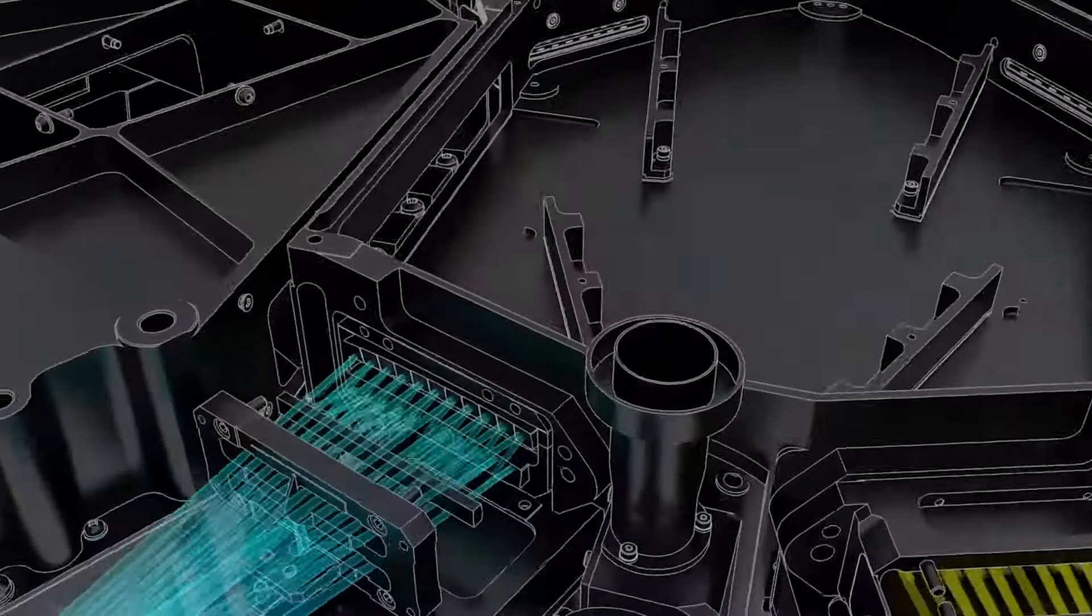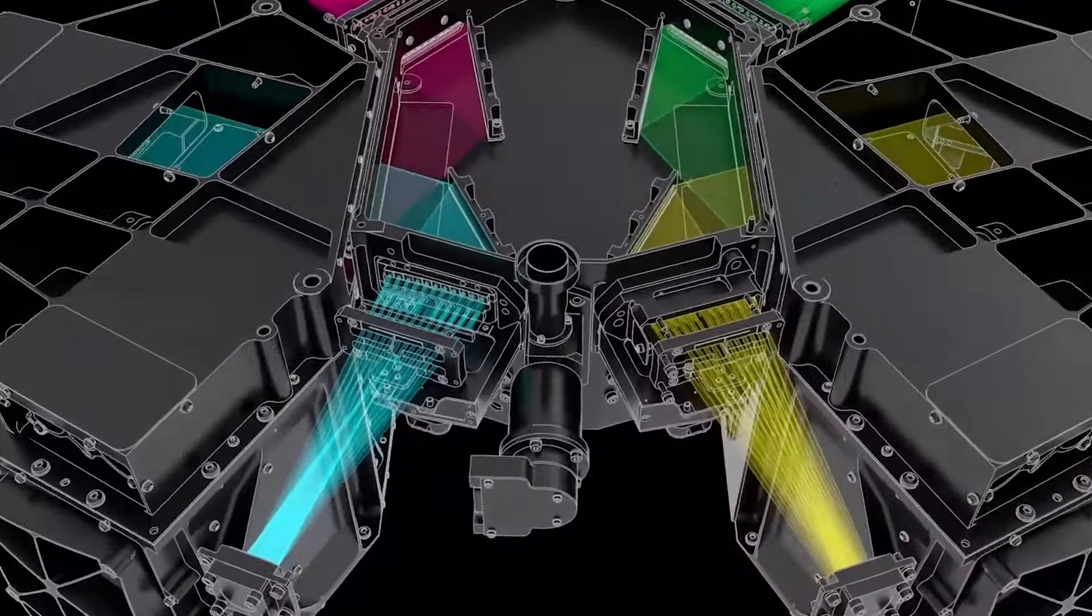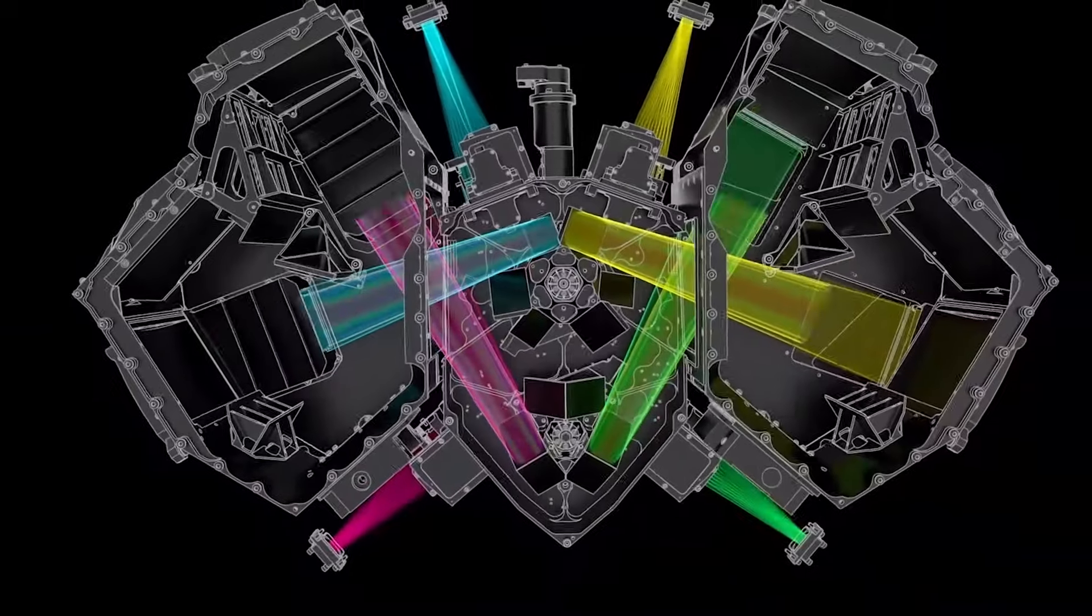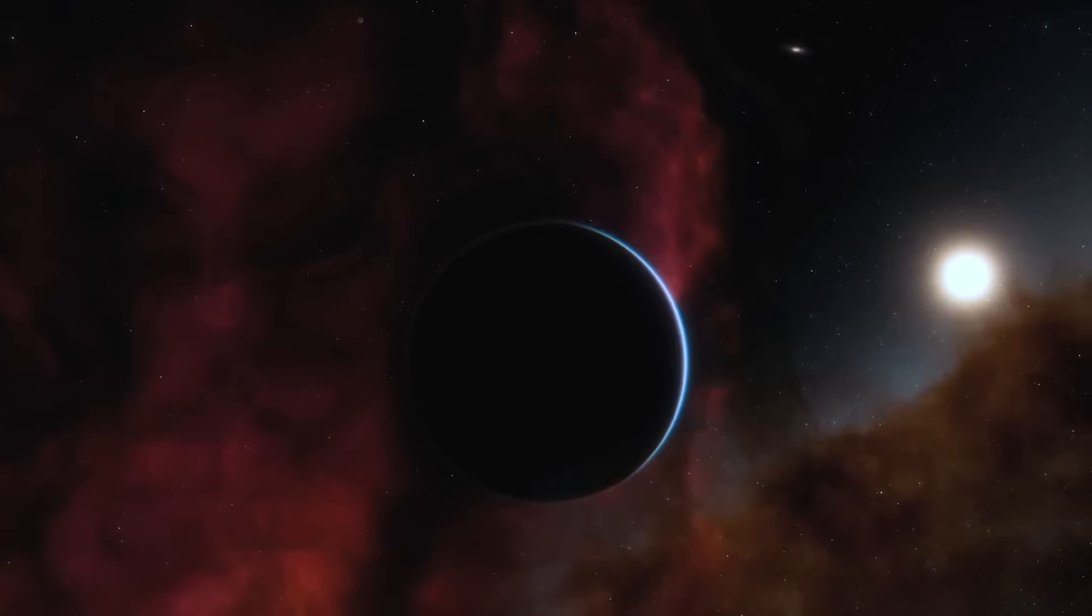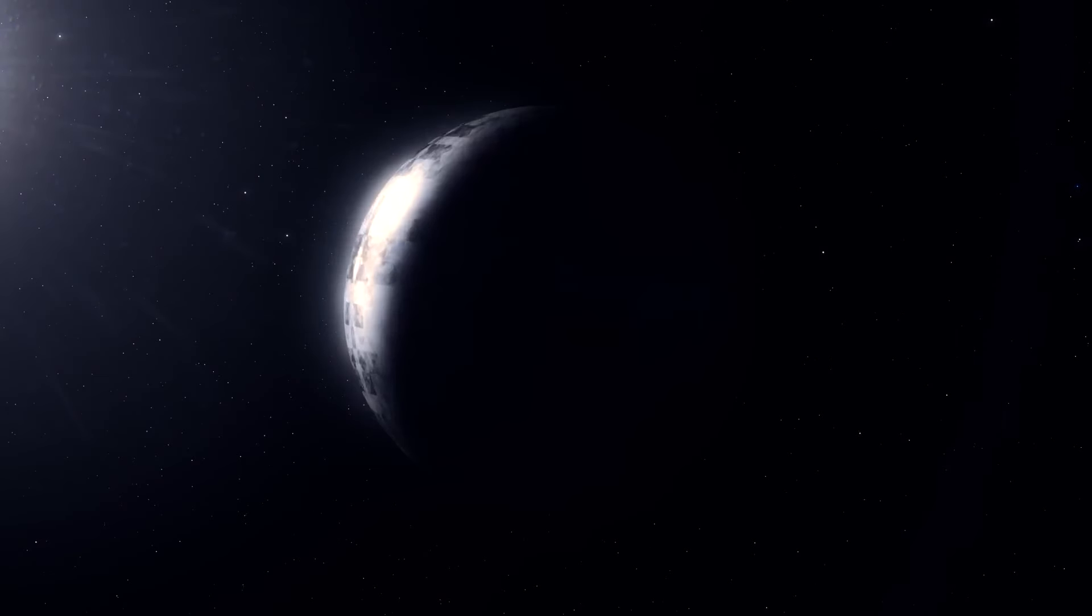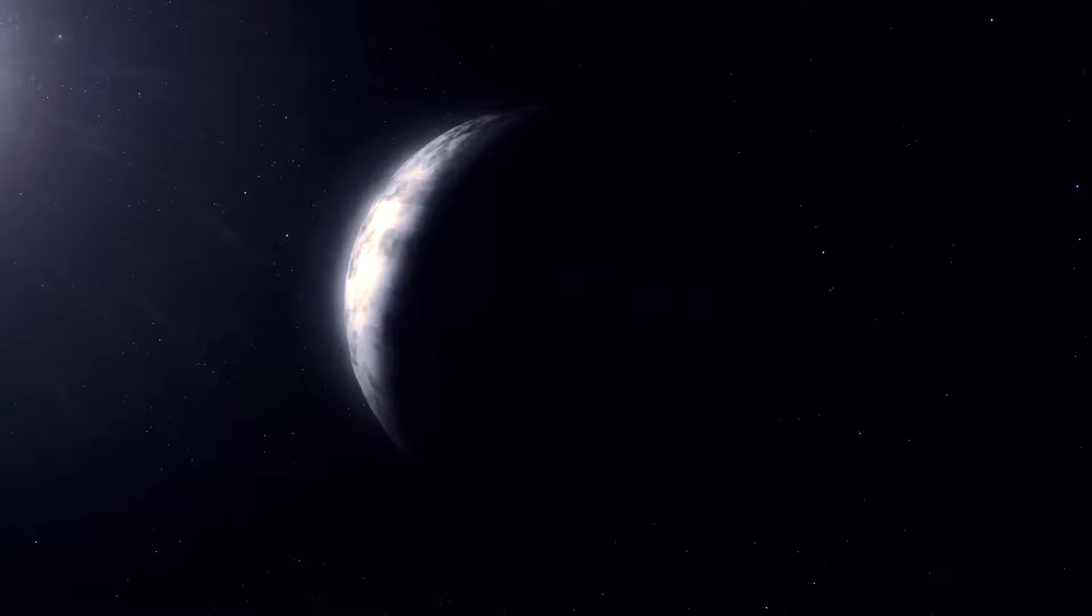Proxima b exhibits an interesting relationship between its stellar features and its surface interactions, with its daytime sight adorned with solar panels that harness the energy of its host star, while its night sight time experiences cold temperatures.